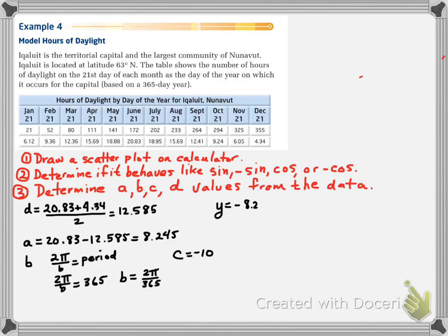Now, I put that all together. y is going to equal our a value, and it has to be negative cos, so it'll be negative 8.245 times the cosine of 2π divided by 365 times (x + 10). And then, on the back end, it's going to be plus d, which is 12.585. Now, if you put that into y1, you should see this graph go through all of the points on your scatter plot.